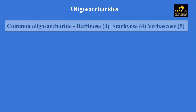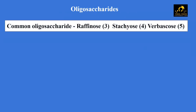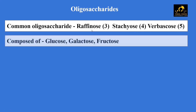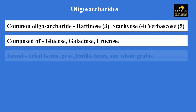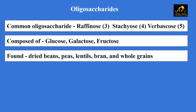The most common oligosaccharides we come across are raffinose, stachyose, and verbascose — where 3, 4, and 5 represent the number of monosaccharide units present in them. Each of these is composed of glucose, galactose, and fructose. They are found in dried beans, peas, lentils, bran, and whole grains.